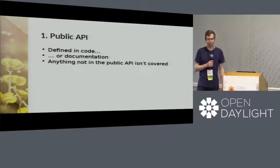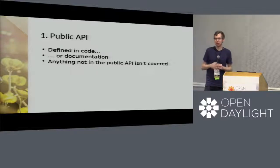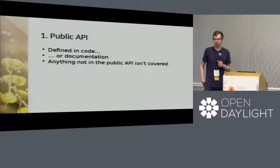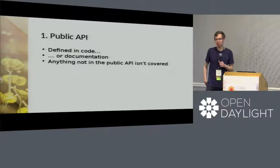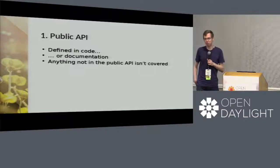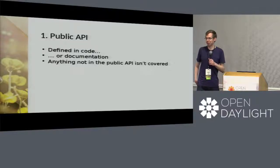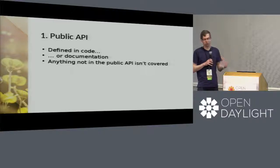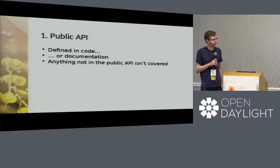The first point of the semantic versioning spec — and the most important one — is that it only concerns itself with public APIs. It's up to you to define what a public API is. You can say it's anything in your developer's guide PDF, anything that has Javadoc, or anything that's public in Java terms. That's something we need to agree upon.